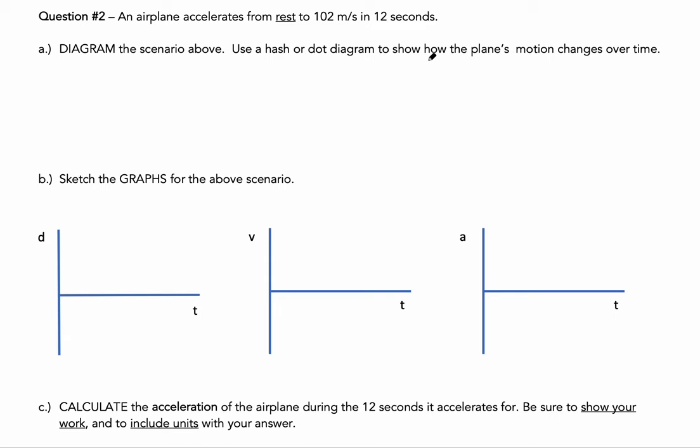Alright, so we've got this airplane that's accelerating from rest to 102 meters per second in 12 seconds. We want to diagram this scenario. I had some questions in terms of how to diagram the line here. Does it have to be like a diagonal like a plane would be taking off or could it be straight?